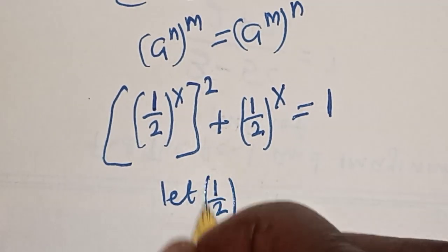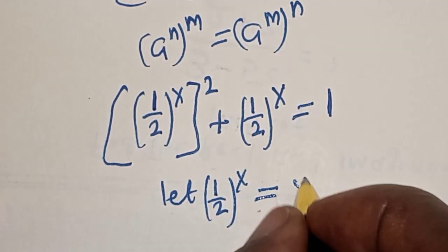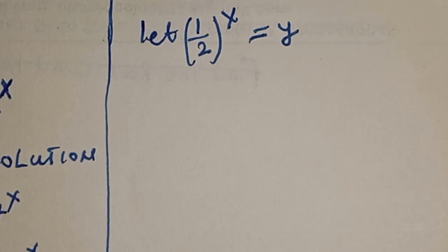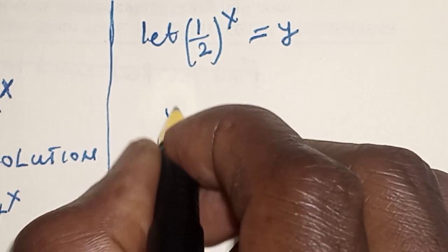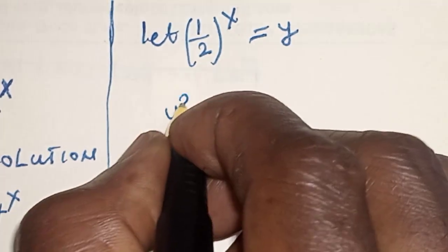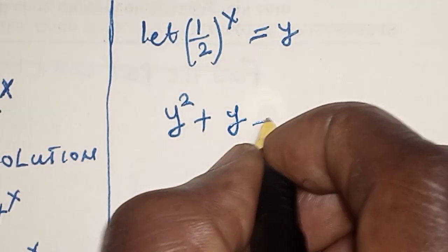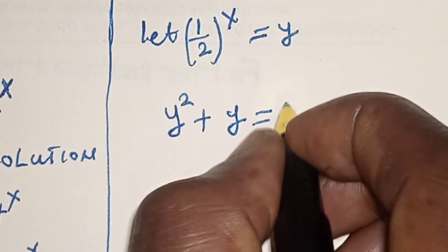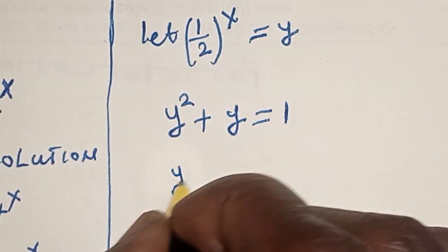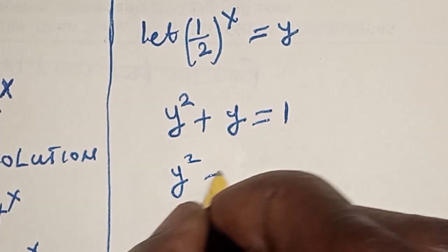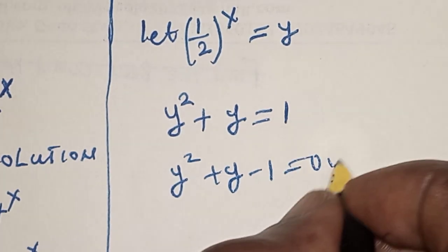So we have 1 over 2 raised to the power 2s plus 1 over 2 raised to the power s is equal to 1. Let y equal 1 over 2 raised to the power s. This gives us y squared plus y equals 1, or y squared plus y minus 1 equals 0.